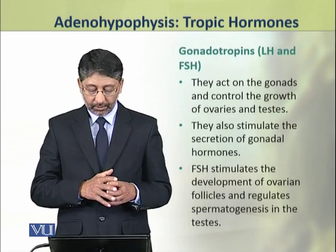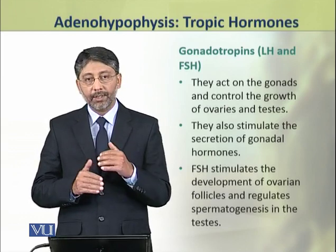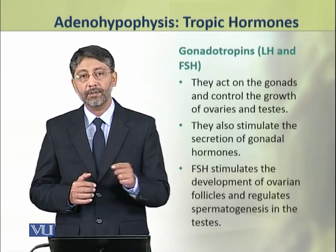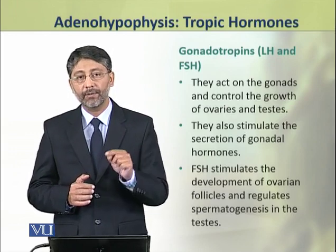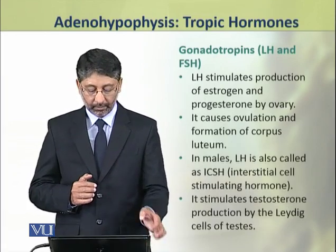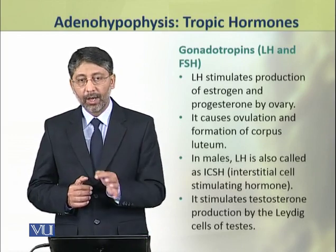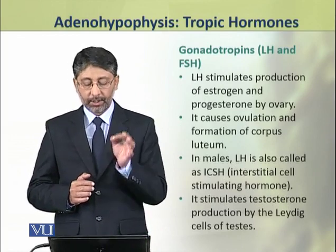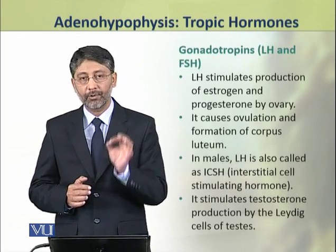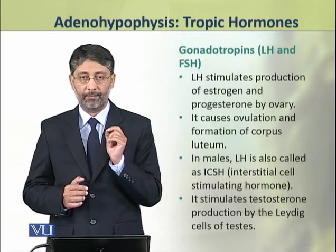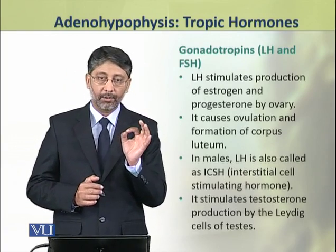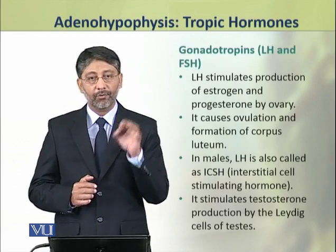FSH stimulates the development of ovary follicles and regulates spermatogenesis in males. Luteinizing hormone stimulates the production of estrogen and progesterone by the ovary. This hormone also causes ovulation.